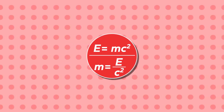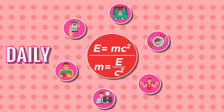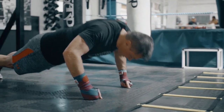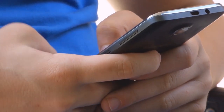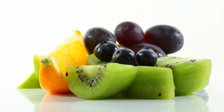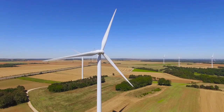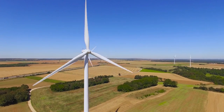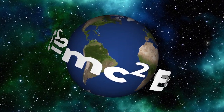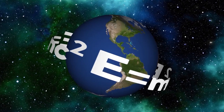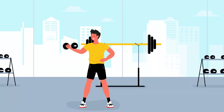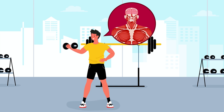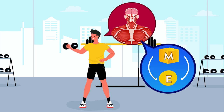This simple two-variable equation controls each and every aspect of our daily life — from every action done by our body to the anchor point of our solar system, from our handy smartphone to our gasoline-hungry car, from our body's energy source to the energy that runs our appliances. E is equal to mc² is everywhere, and it's the reason behind everything happening around us. Each and every action of your body relies on chemical reactions between the brain and the muscles, which are further dependent on the conversion between mass and energy.